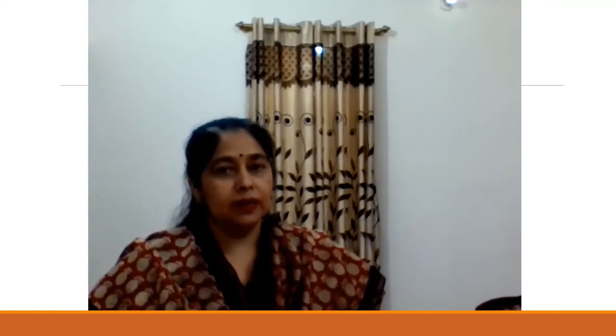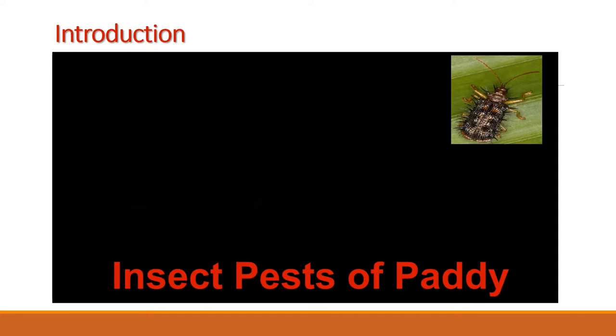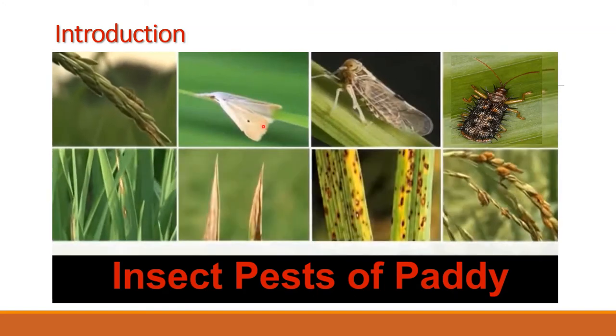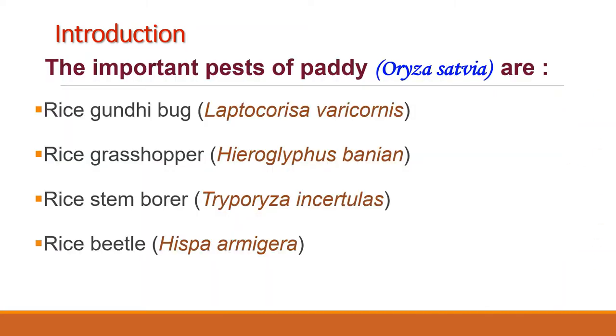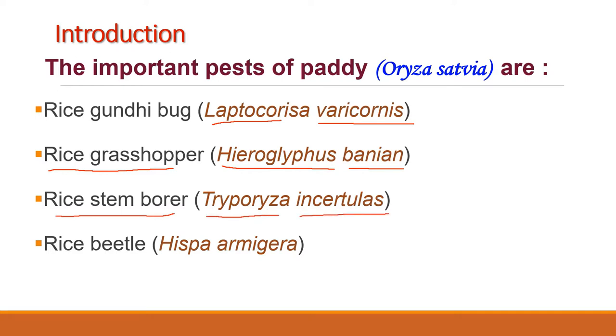At the end of this lecture, you will be able to explain the systematic position, habits, morphology and life cycle of Gandhi bug, known as Leptocoryza varicornis, and about the systematic position, habits and damage caused by the rice grasshopper, rice stem borer and rice beetle, known as hispa. Have a look at the pictures of four economically important pests of paddy which damage the rice crop at different stages. Their common and scientific names are: rice Gandhi bug (Leptocoryza varicornis), rice grasshopper (Hieroglyphus banian), rice stem borer (Tryporyza incertulas), and rice beetle Hispa armigera.